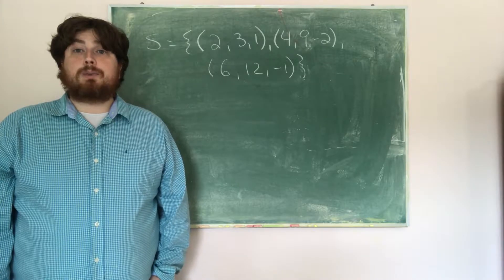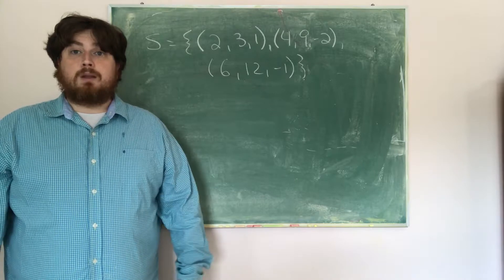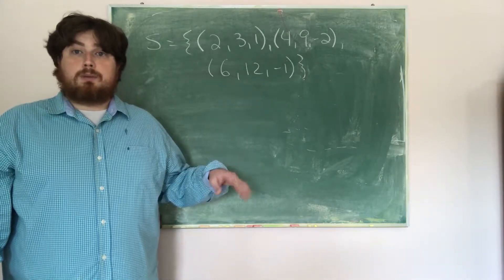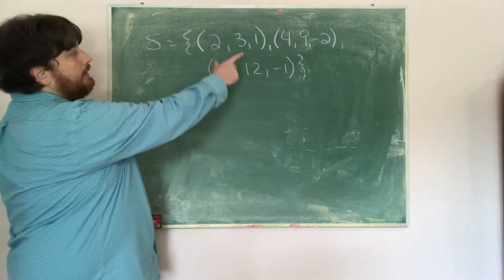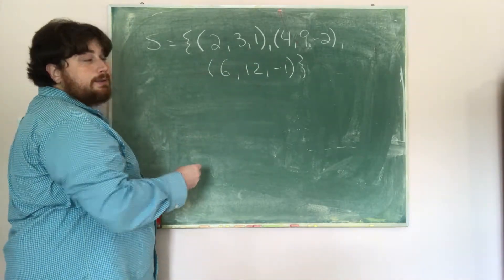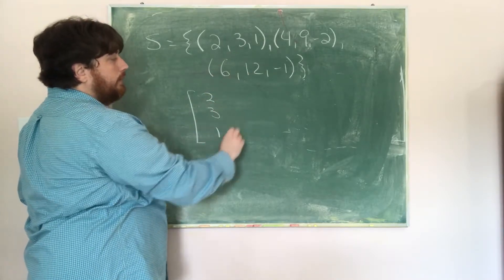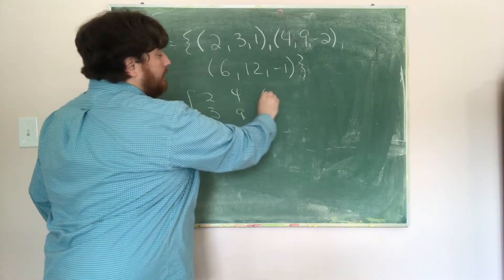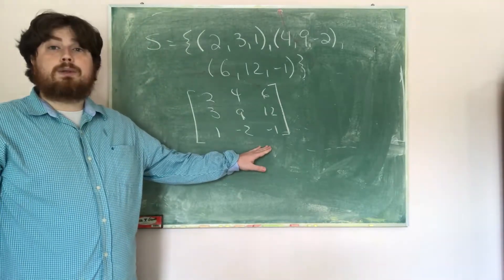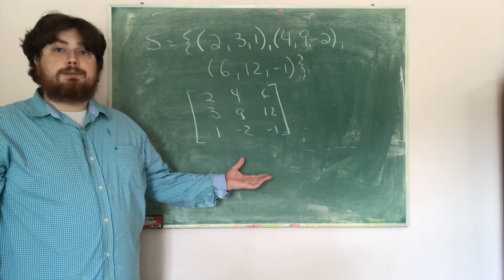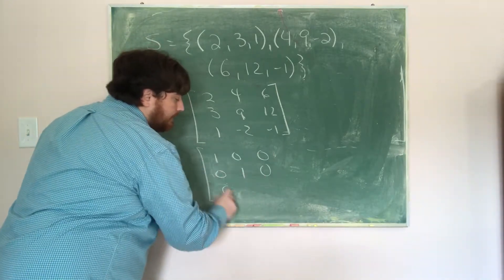Now that we've seen one example, let's look at another one. Following the process without all the explanation: to determine if a new set of vectors is linearly independent or spanning, we take the vectors and turn them into a matrix where each vector becomes a column — giving us (2, 3, 1), (4, 9, −2), (6, 12, −1). We row reduce this matrix and get the identity matrix: rows (1, 0, 0), (0, 1, 0), (0, 0, 1).